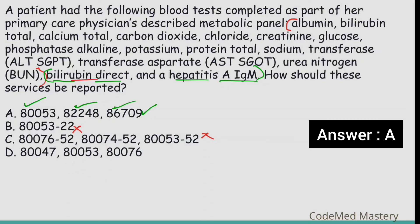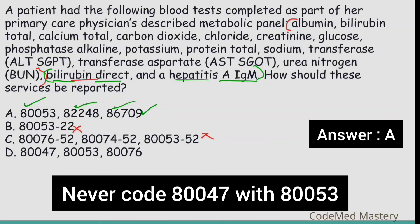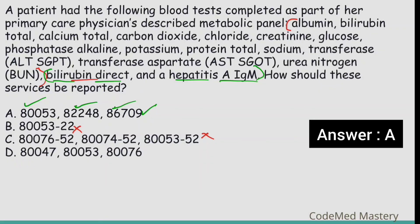Option D mentions 80047 with 80053, but remember we should never code 80053 with 80047 because all tests present in 80047 are included in 80053. Code 80076, Hepatic Function Panel, includes albumin, bilirubin total, and bilirubin direct but does not include chloride, carbon dioxide, or creatinine, so we must report the panel that incorporates the greater number of tests, which is 80053. Therefore option D is wrong.